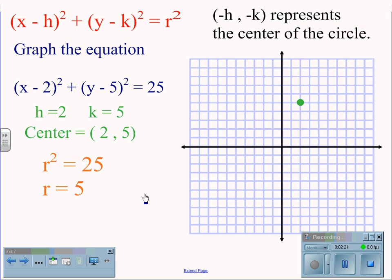r squared in this case equals 25, so r itself would be 5. So we count out 5 spaces to the right of the origin, 5 spaces above the origin, 5 spaces to the left of the origin, and 5 spaces below the origin, giving us a circle through these points.